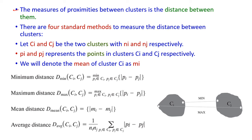The measure of proximity between clusters is the distance between them — that is, the closeness between clusters. How close are two clusters to each other? For this we can use four standard methods. We define Ci as cluster one and Cj as cluster two, where Ci has i number of objects and Cj has j number of objects.